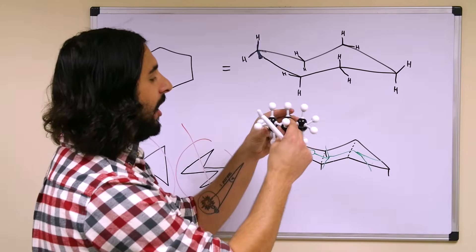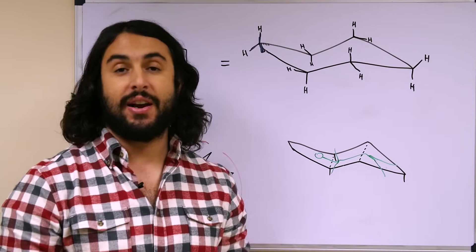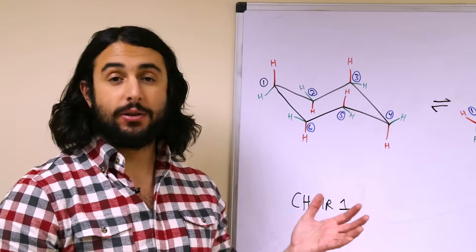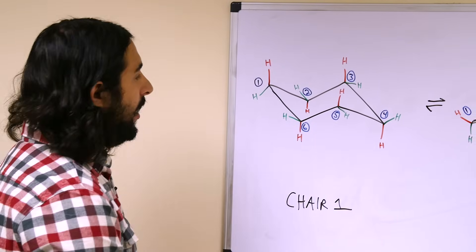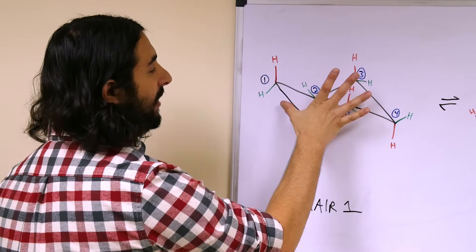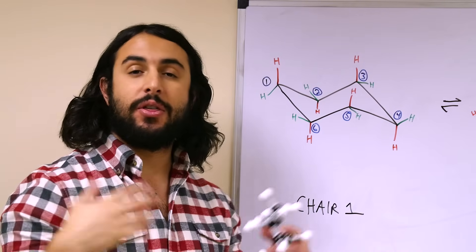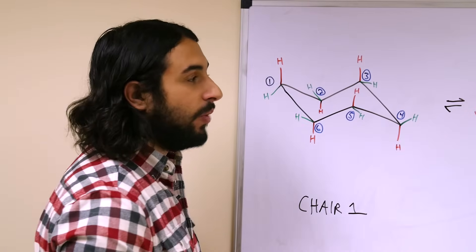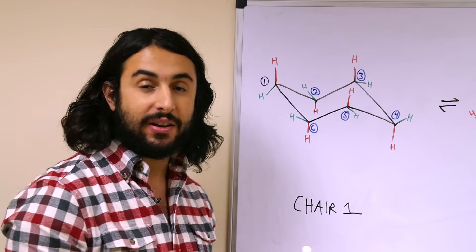Let's take a look at something called a chair flip and what happens when that occurs. The chair is comprised of three sets of parallel lines: this line and this line should be essentially parallel, these lines should be parallel, and these lines should be parallel. We want to be able to clearly see which is the leftmost and which is the rightmost carbon, because that's going to enable us to keep track of things when we flip the ring.